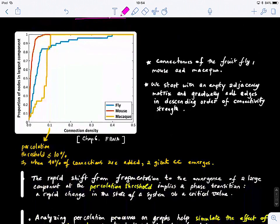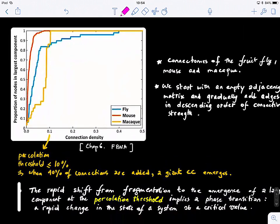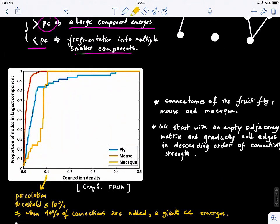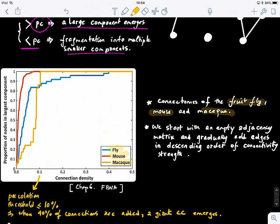Now, this is the last example. So here, for example, what we have, we have connectomes, brain connectomes of different species, fruit fly, mouse, and macaque. And first, how do we compute the percolation? We start with an empty adjacency matrix. We gradually add edges in descending order of connectivity strength. So we're kind of creating the graph in the reverse way. So we have like a graph connectome, a brain graph connectome, and we're emptying it out and then adding the connections with the highest weights.